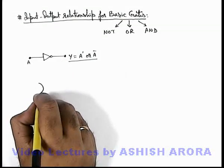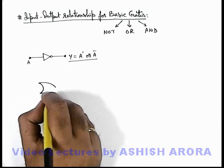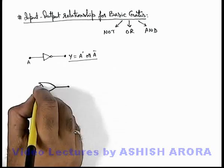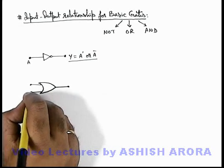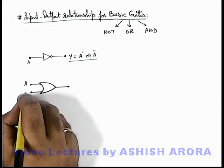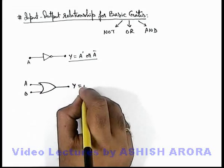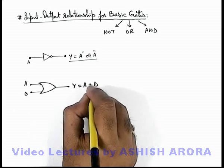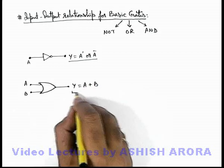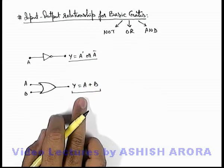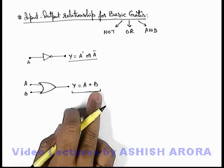If we draw an OR gate, if we talk about two input OR gate, here we can see if there are two inputs applied to an OR gate, then the output we write as A plus B. This is the symbolic representation of the output which is given in terms of inputs.